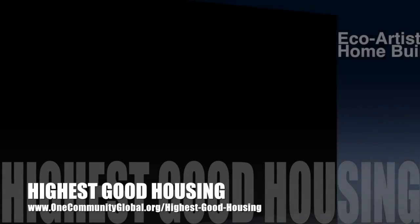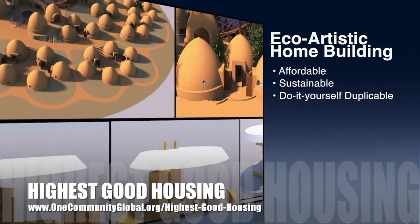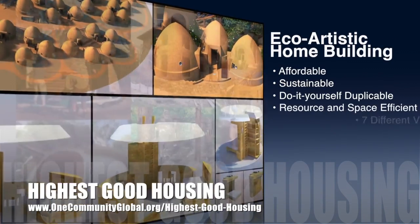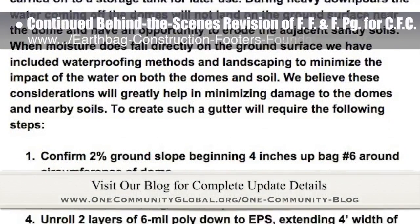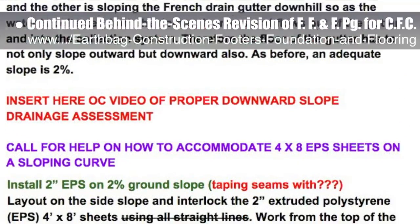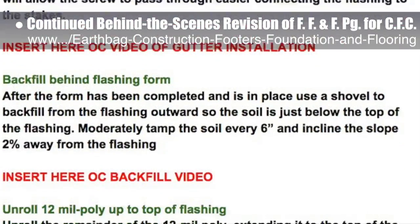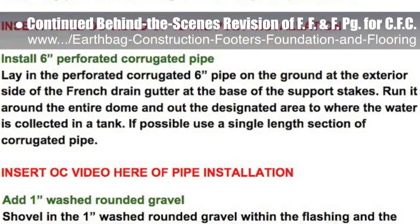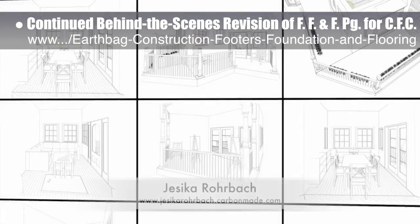One Community's approach to highest good housing is eco-artistic home building that is affordable, sustainable, do-it-yourself, duplicable, resource and space efficient, and consists of seven different sustainably constructed village models. This week the core team put another 10 hours into behind-the-scenes revisions for the footage, foundations, and flooring page of the crowdfunding campaign we're developing. This week's focus was finishing the narrative for dome exterior finishing, adding title inserts, and beginning the step-by-step write-up and review for section 14 gutter construction. We are now 67% complete with this total update and rewrite.